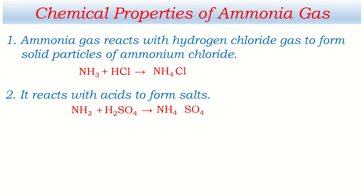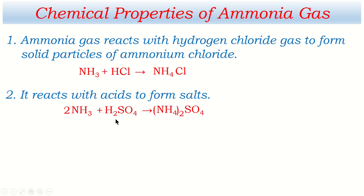Ammonium has valency 1 and sulfate has valency 2, so we exchange the valencies. The valency of sulfate is given to ammonium, and since ammonium is a radical we place it in brackets with subscript 2. Ammonium sulfate (NH4)2SO4. Balancing: Sulfate 1 = 1, Hydrogen 8 = 8, Nitrogen 2 = Nitrogen 2. This is a balanced chemical equation.